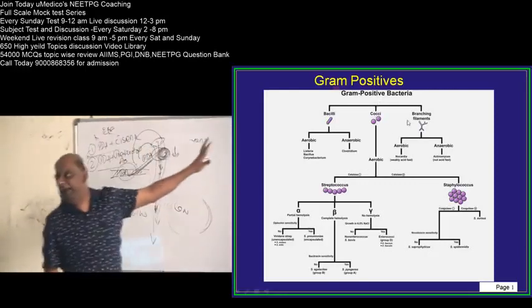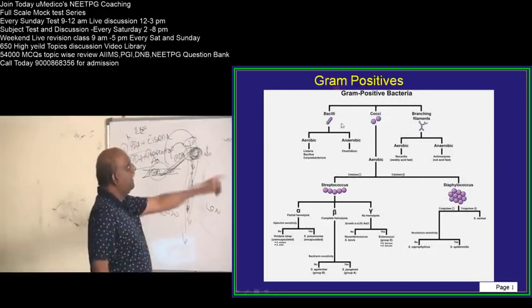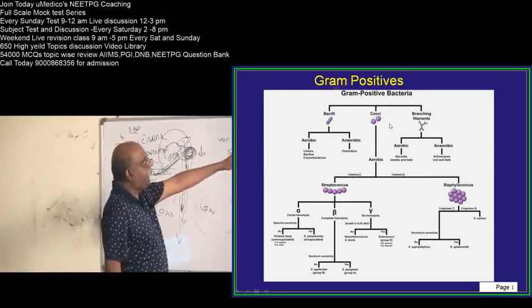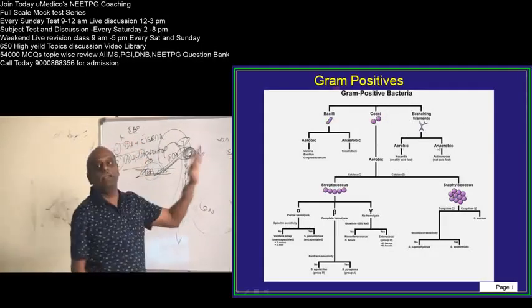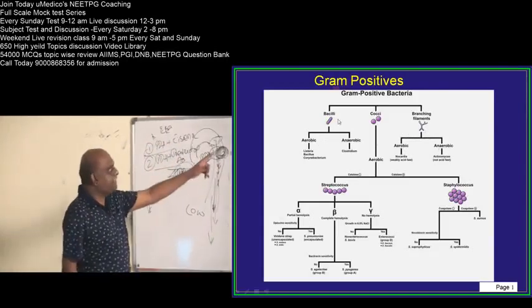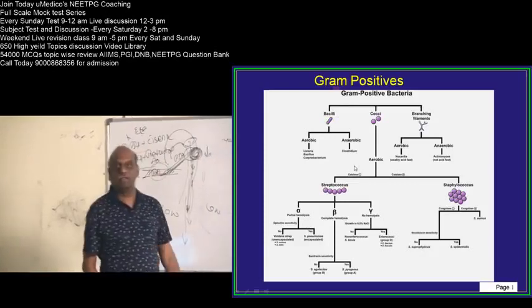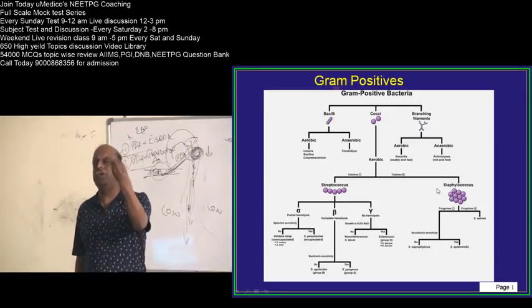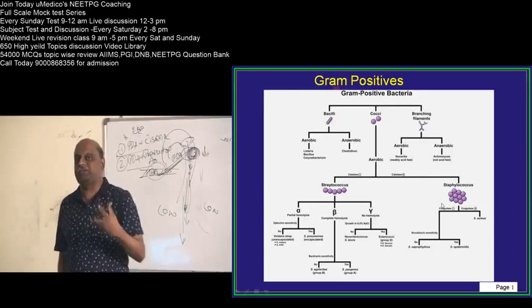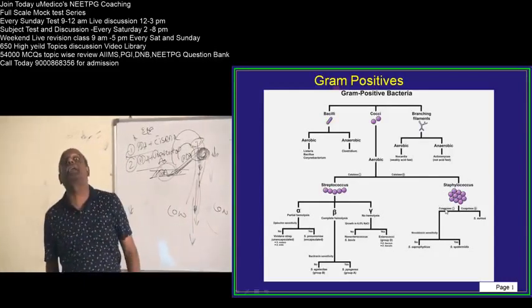Now, how do you look at gram positive bacteria? Bacilli, cocci and branching filaments, that is how we divide them. Bacilli can be aerobic or anaerobic. Give me one gram positive anaerobic bacillus, classical example, clostridium.